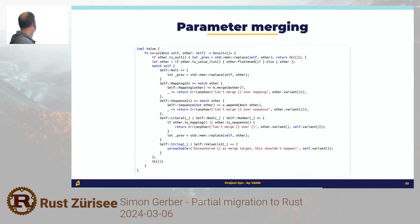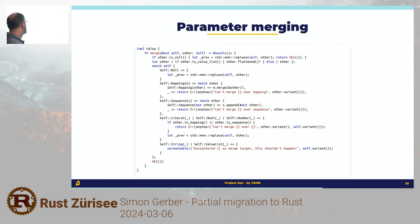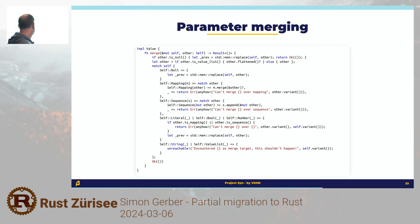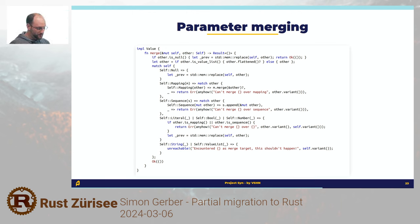Parameter merging is basically a big match with some cases that aren't allowed. The simple ones are literal, boolean, number — if we try to merge those over a mapping or sequence, it's not allowed; otherwise we just replace the current value with the new value. The other easy ones are mapping and sequence, where we just merge or append. The easiest one is null — everything can be merged over null, so we do a replace. There's also a prelude where we allow null to be merged over anything. If at this point we encounter a string or value list, something went really wrong — this shouldn't happen because value lists should have been flattened, and strings indicate the parameter parsing didn't work correctly.